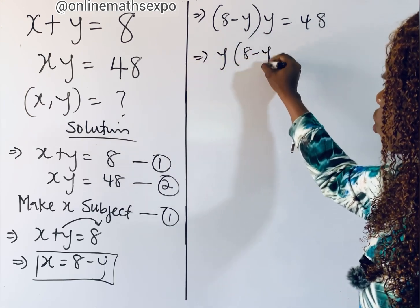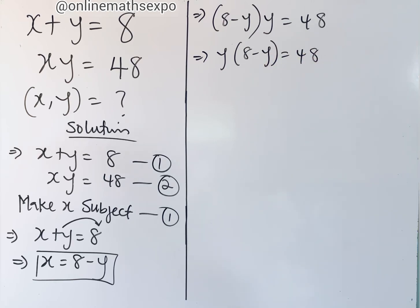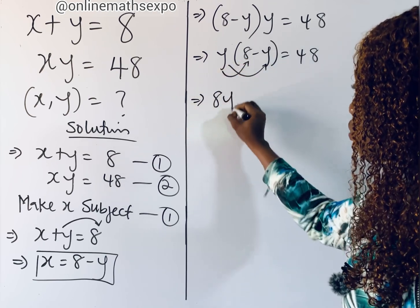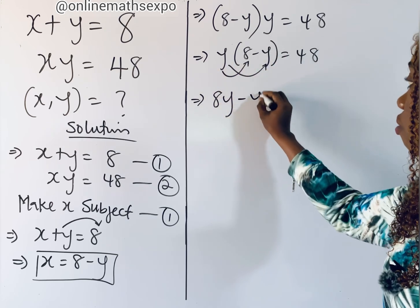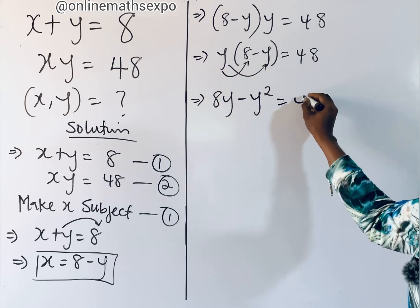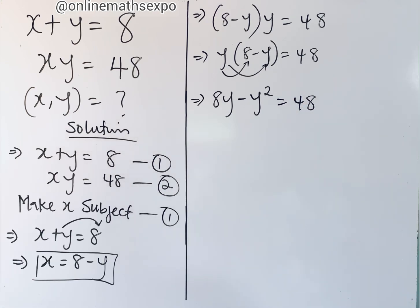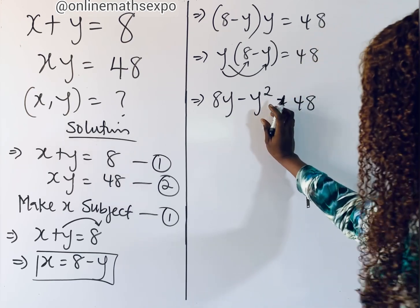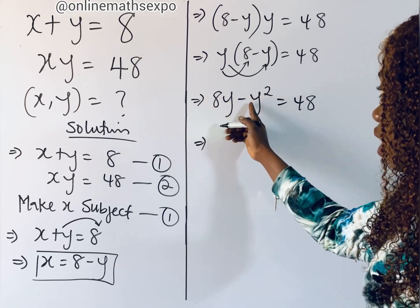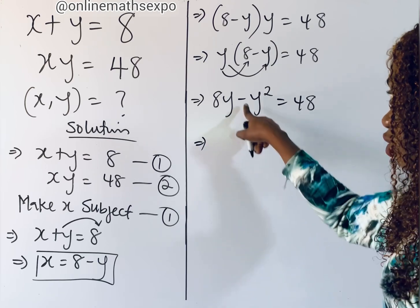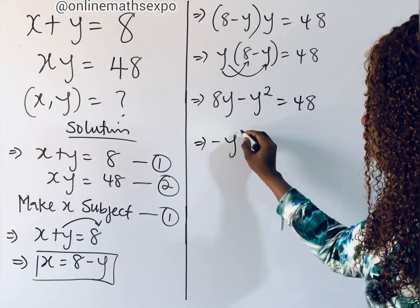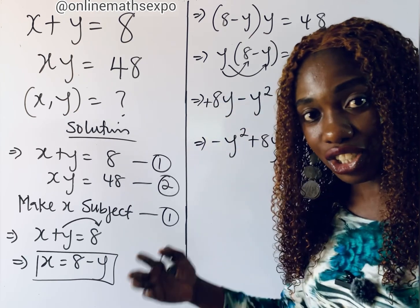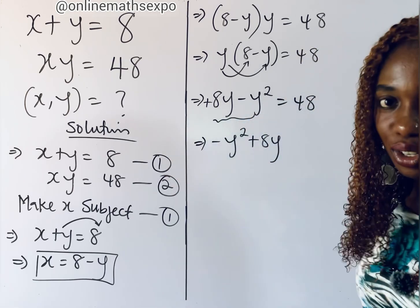This can be written as y times (8 minus y) equals 48. Distributing, we get 8y minus y squared equals 48. This is leading us to a quadratic equation because the highest power of y is 2. You are free to rearrange this so that the y squared term comes first — but be careful to carry along the negative sign.